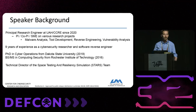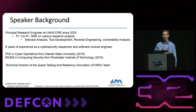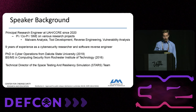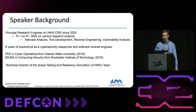A little about myself: I'm a principal research engineer at UAH CCRE since 2020. I've been a PI and SME on various research projects covering malware analysis, tool development, reverse engineering, and vulnerability analysis, including satellites. I have nine years of prior experience as a cybersecurity researcher and software reverse engineer. I got my PhD in cyber operations at Dakota State University and my BS and MS in computer security at Rochester Institute of Technology. I'm the technical director of the Space Testing and Resiliency Simulation team at CCRE.